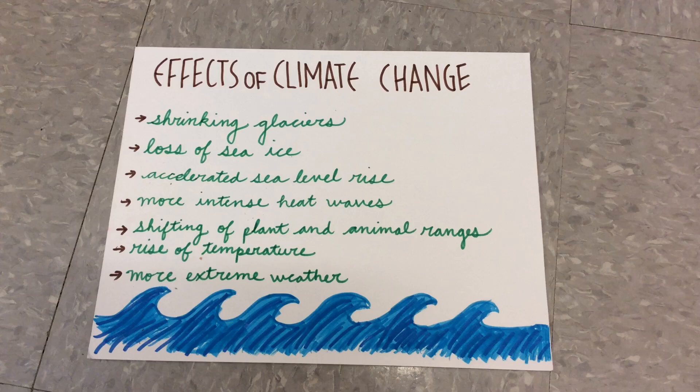Some effects of climate change are shrinking glaciers, loss of sea ice, accelerated sea level rise, more intense heat waves, shifting of plants and animal ranges, rise of temperature, and more extreme weather.